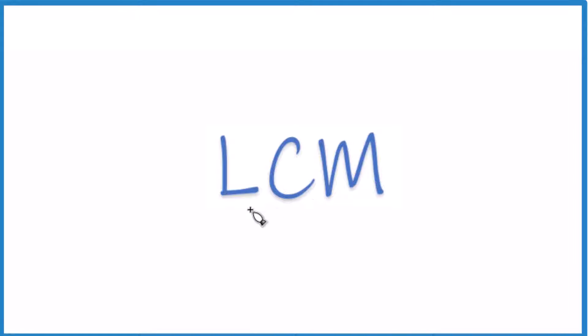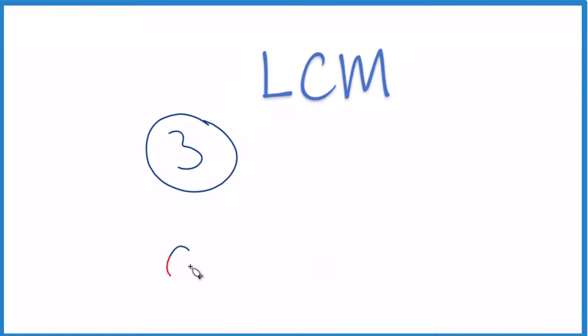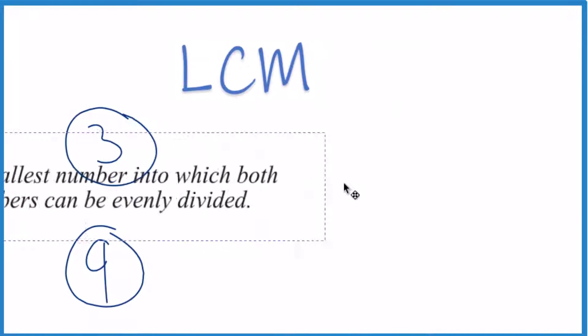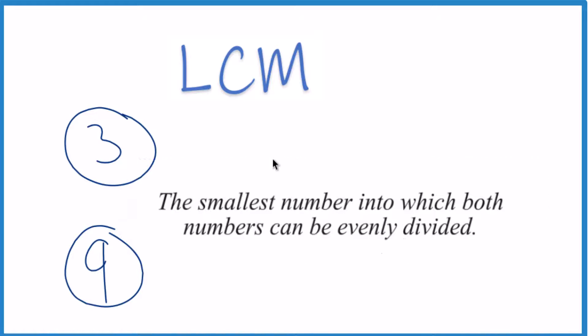Let's find the least common multiple, the LCM for 3 and 9. So when we're talking about the LCM, we're talking about the smallest number that both of these numbers divide into evenly.